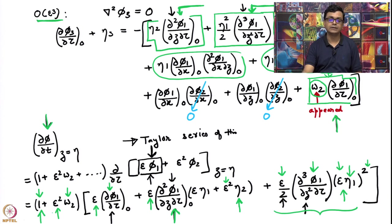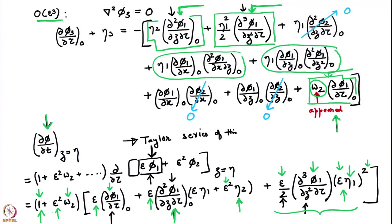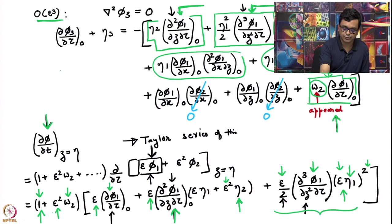Now we need to do what we did at the previous order: work out the functional form of all the terms which are not zero. The terms where φ₂ appears are all zero — I have put blue arrows indicating they are all zero. We will have to work out the functional form of the remaining 5 terms. We can do that because we know η₁, we know φ₁, we know η₂, and we know φ₂. Phi_2 has been used to set some terms to zero.